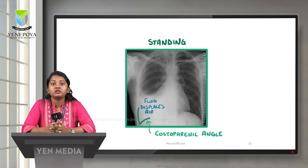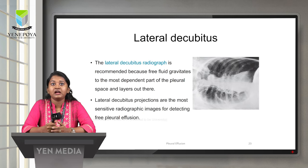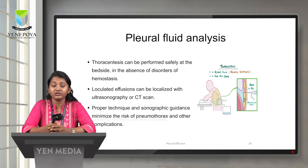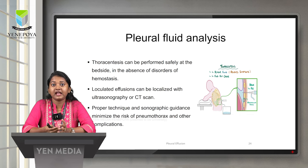On this PA view, we can see the blunting of the costophrenic angle because the fluid is displacing the air — the costophrenic angle in this chest X-ray is blunt. Lateral decubitus radiography is recommended because if there is any free fluid present, we can see the fluid gravitates to the dependent part — making it a more sensitive radiograph for detecting free pleural effusion. For loculated effusions, we can localize them by ultrasound and CT scan and obtain the fluid using thoracentesis. Proper technique and sonographic guidance is required to minimize the risk of pneumothorax and other complications.